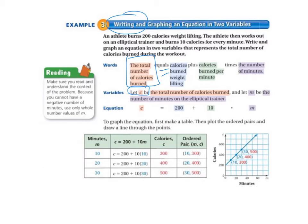So the total number of calories burned, we don't know, so we're going to let C be the variable that stands for that. Calories burned during weight lifting is 200.